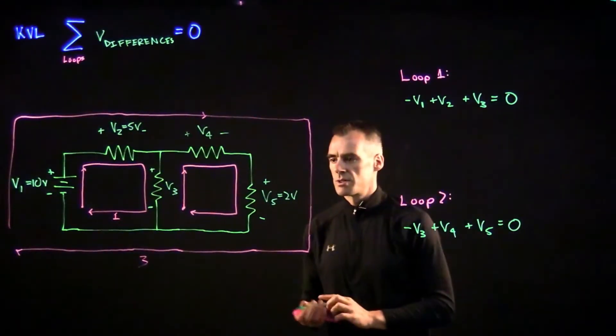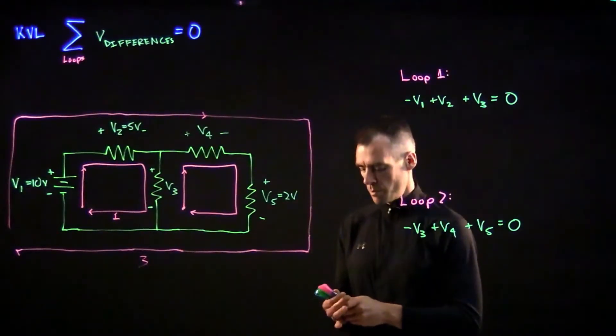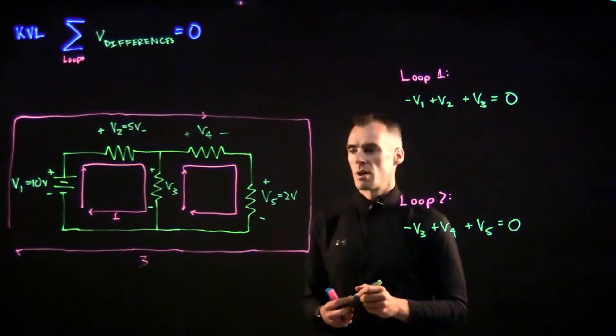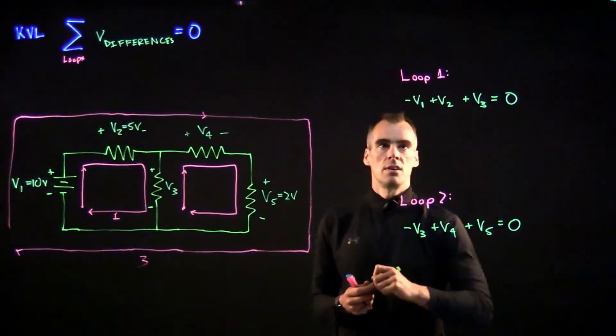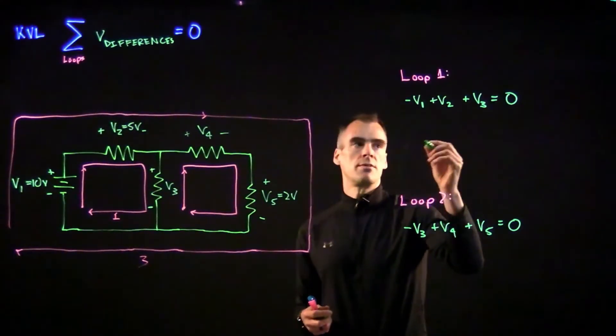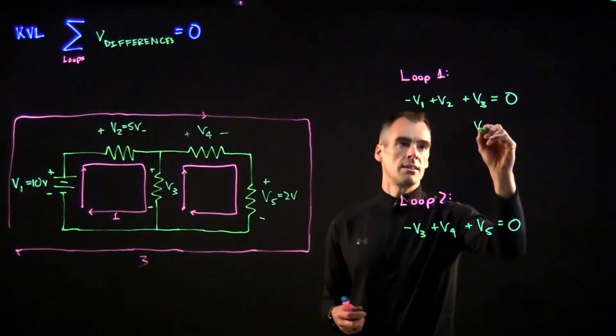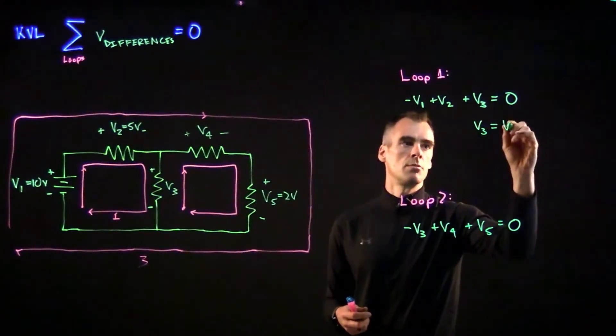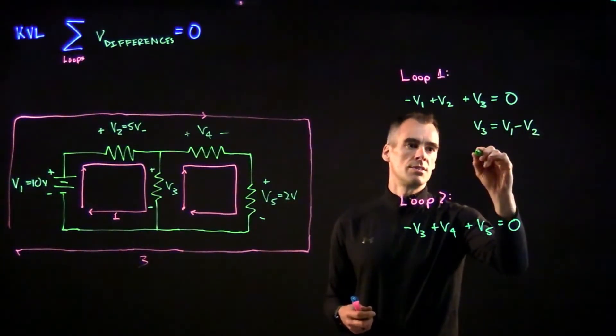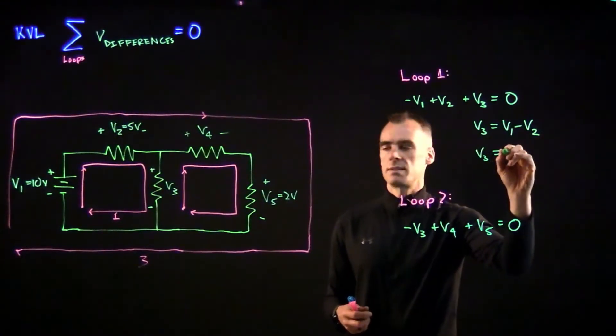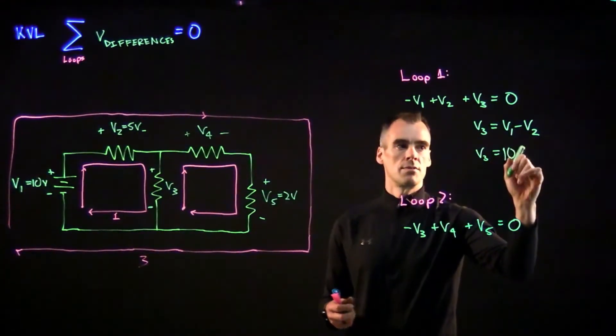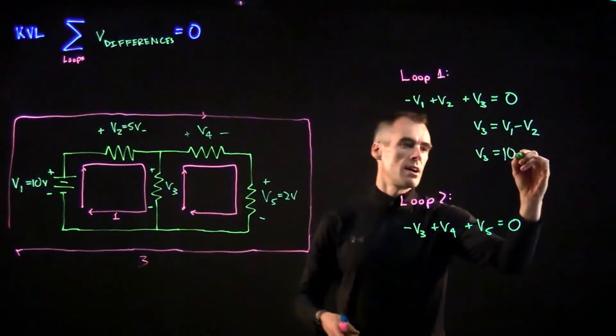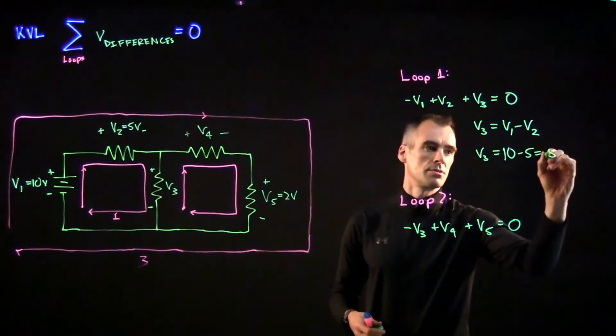Okay, so now we've just got our two equations, two unknowns, so we can solve this pretty simply. We can just go ahead and plug in these values. So maybe we're solving here for V3. We could first solve for V3 and say that that's going to be equal to V1 minus V2, which is equal to 10, which was our V1, and our V2 was 5. So it's going to be equal to 5 volts.